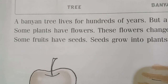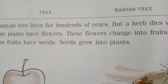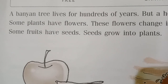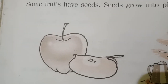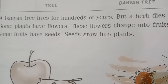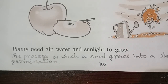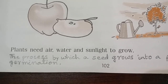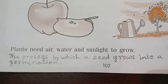Some plants have flowers. These flowers change into fruits. Some fruits have seeds — like this apple, you can see it has seeds. Seeds grow into plants. Plants need air, water and sunlight to grow.